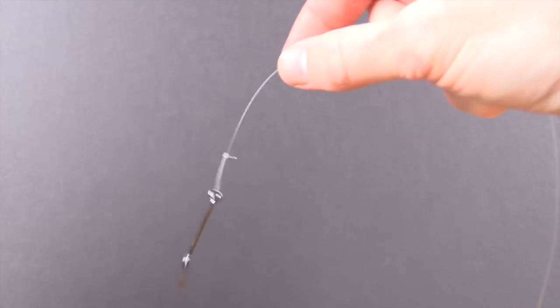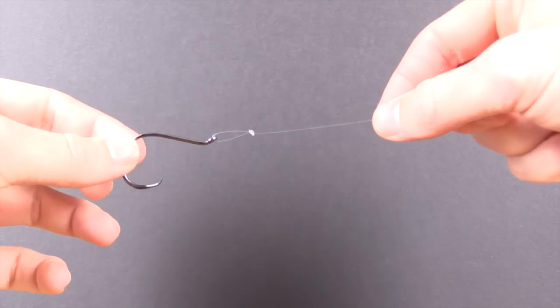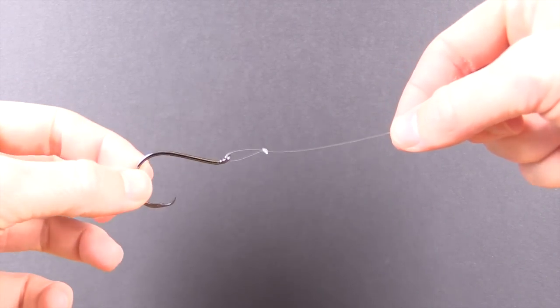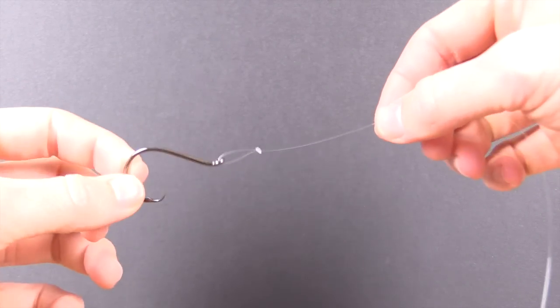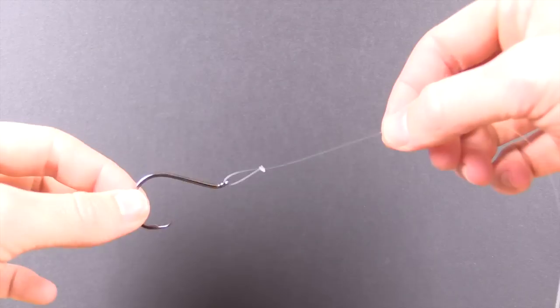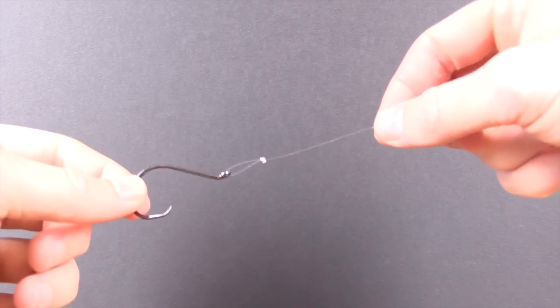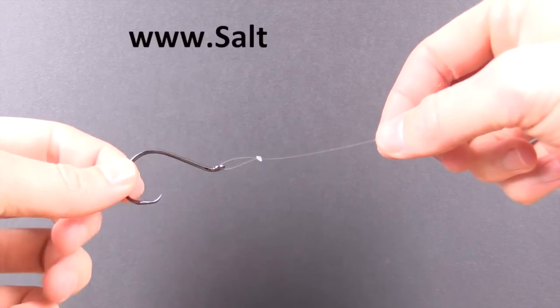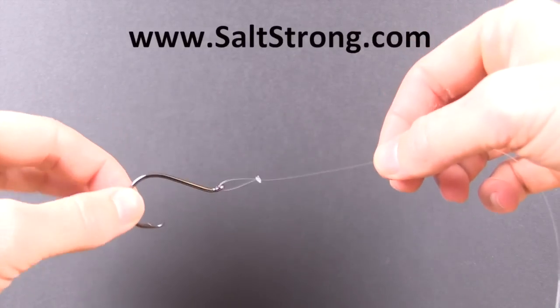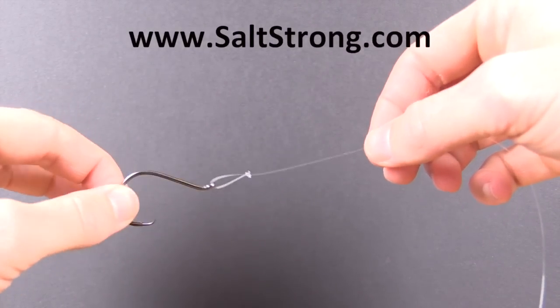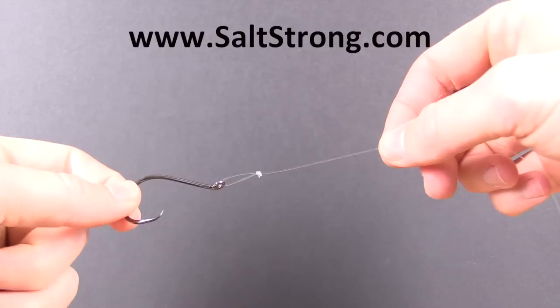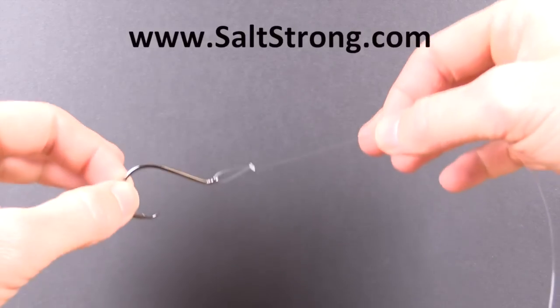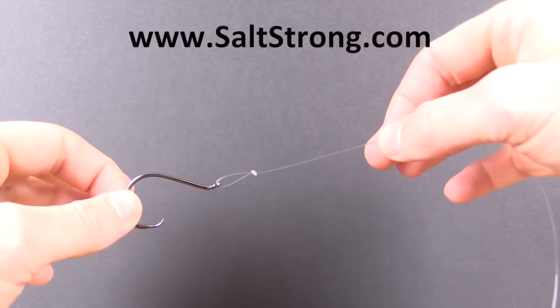So if you do have any questions, feel free to leave them down below. We'll be happy to answer and help out any way possible. If you do want to see how this knot compares strength-wise against other loop knots, we are doing a test and we're going to put the results on saltstrong.com. So if you haven't checked that out yet, just go to saltstrong.com and you'll see an area about knots. So anyhow, thank you so much for your time. Hope you get out and catch some big ones soon.